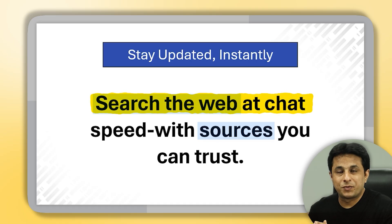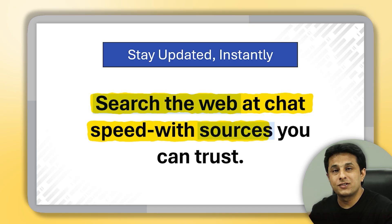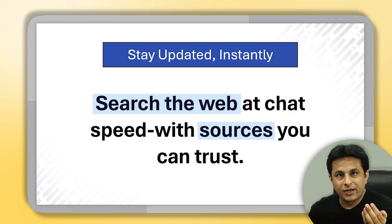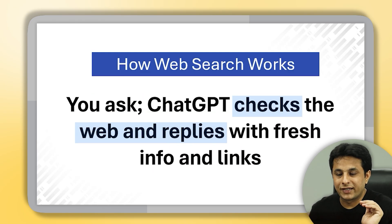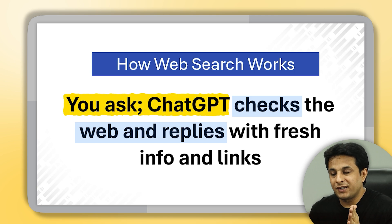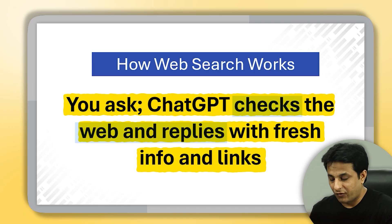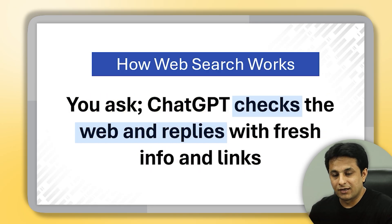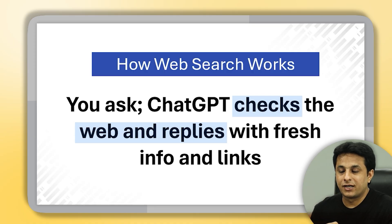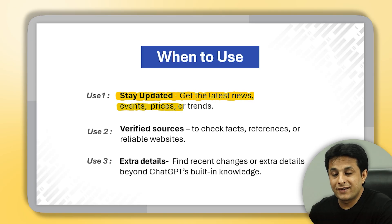ChatGPT web search searches the web at chat speed — the way you chat with someone, it will find all the answers with sources you can trust. You can also tell it which source you want the information from. Basically you ask ChatGPT, ChatGPT checks the web, and replies with fresh info along with the links from where it got the information.